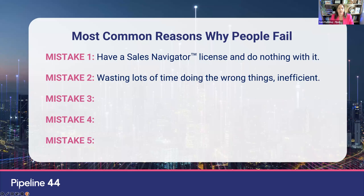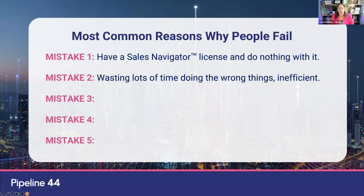Mistake number two is wasting lots of time on the wrong things, which is very inefficient. I see lots of salespeople and business owners who are prospecting, sending messages, putting out content, reposting company pages — but they're wasting time doing the wrong things because they just don't know what the right thing to do is. I see sometimes people saying my sales team is spending hours and hours in LinkedIn but they're just not getting results. You don't have to spend hours in LinkedIn in order to get results.